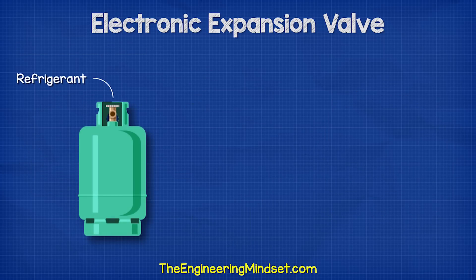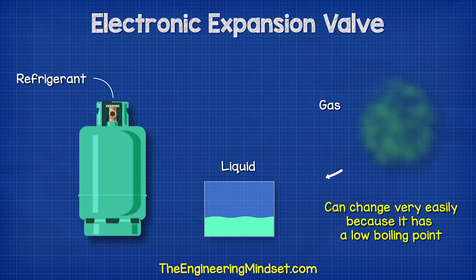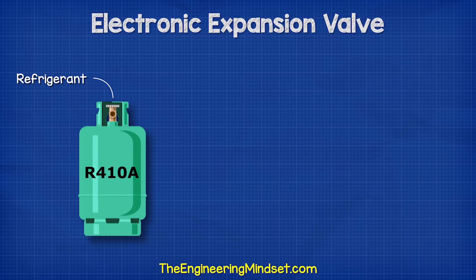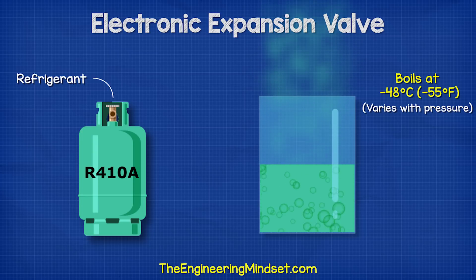The refrigerant is a specially designed fluid which can change between being a liquid and a gas very easily, and that's because it has a very low boiling point. For example, refrigerant R410A will boil at negative 48 degrees Celsius or negative 55 degrees Fahrenheit, although this will change with pressure.